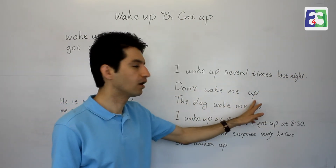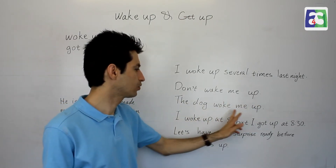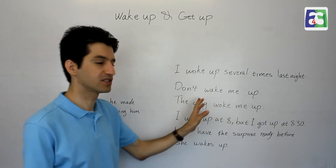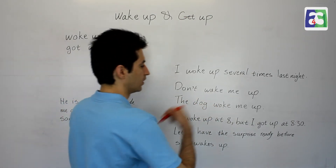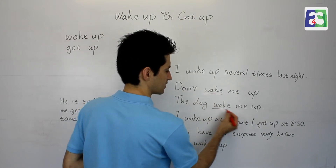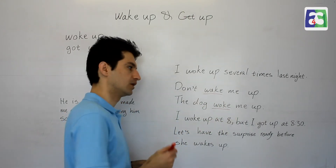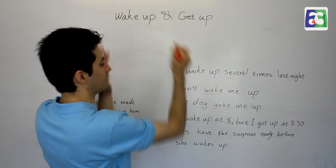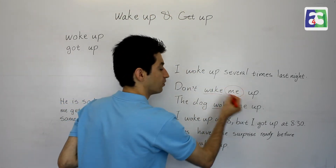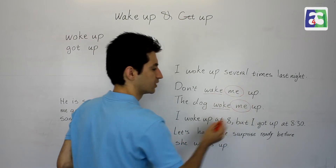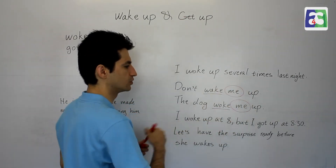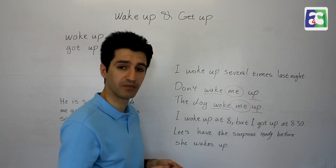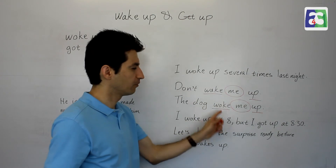Now: 'Don't wake me up' and 'The dog woke me up.' These examples show something important. The past tense is woke up, and also we can separate the two parts — wake and up — and put the object pronoun in between. We mainly would not put a name between the two; we mainly use object pronouns.